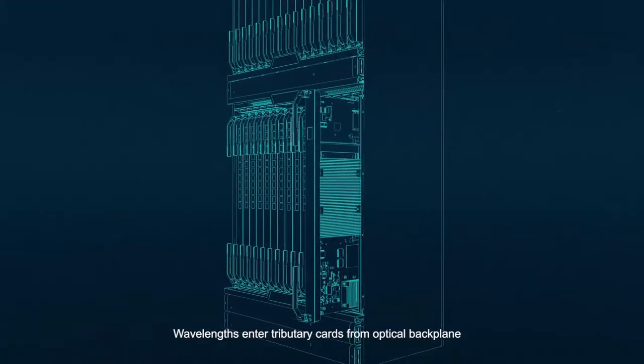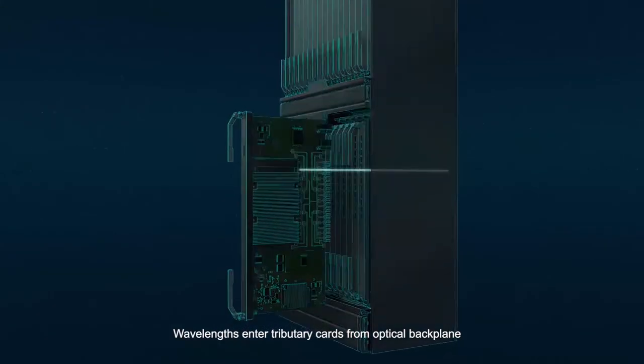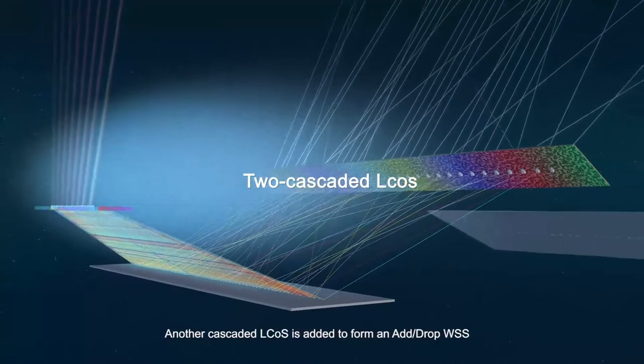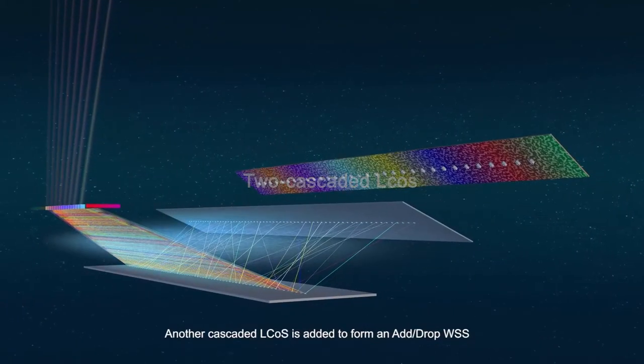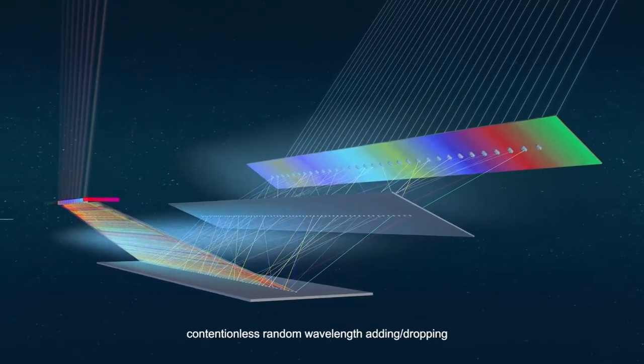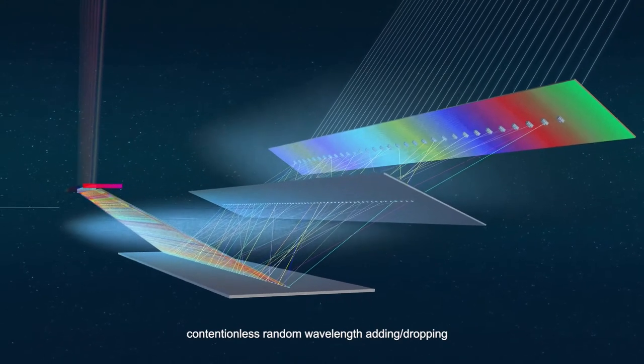Wavelengths enter tributary cards from optical backplane. Another cascaded LCoS is added to form an add-drop WSS, achieving multi-direction, contentionless, random wavelength adding-dropping.